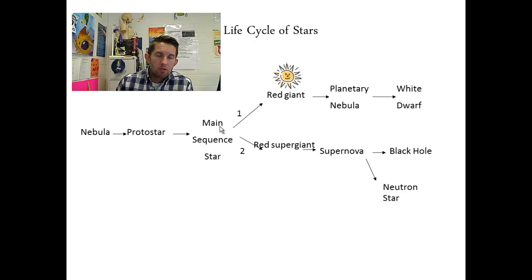If it's a smaller star, a medium-sized star like our sun, after it runs out of hydrogen, after all the hydrogen's been fused into helium, that star's going to start to shed its outer layer. It's going to become a red giant.